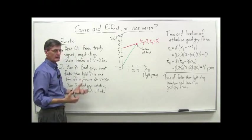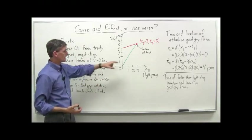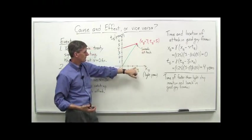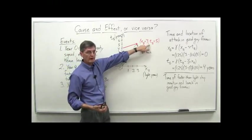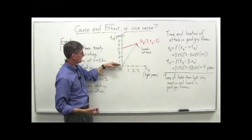And from the bad guys' perspective, that sneak attack occurs at x sub b equals three, okay, three light years away, and a time of five years, ticking off from zero here.